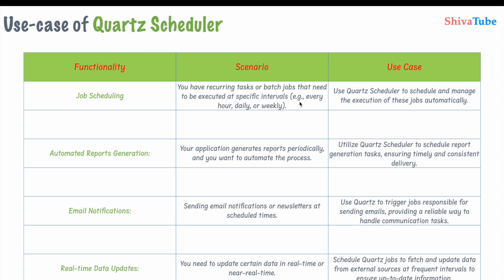There is another use case: automated report generation. Suppose you have a monthly bank statement report — you can use Quartz Scheduler to automate this process. Your application generates reports periodically and Quartz Scheduler handles the scheduling. Similarly, email notifications and real-time data updates are additional use cases where Quartz Scheduler applies.